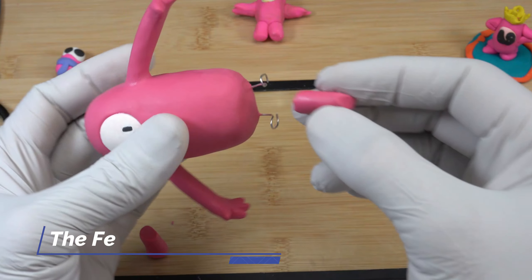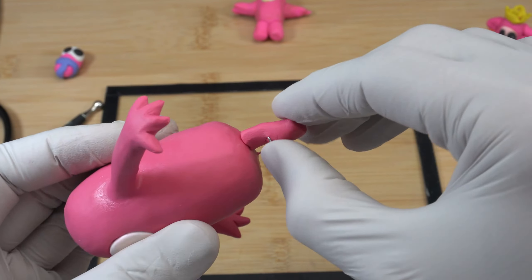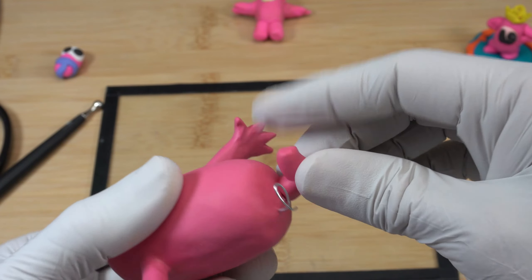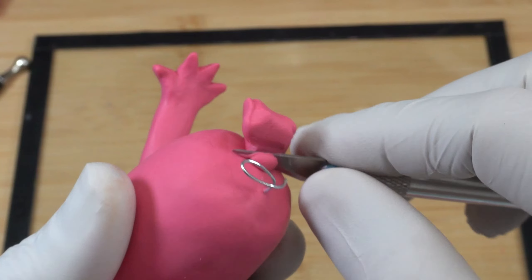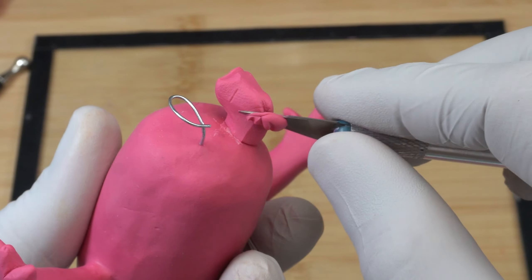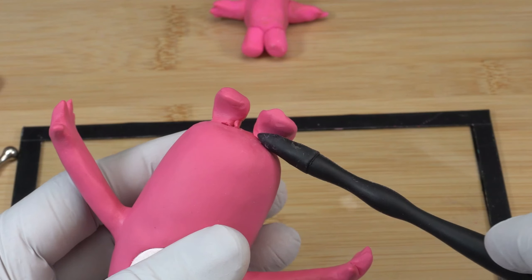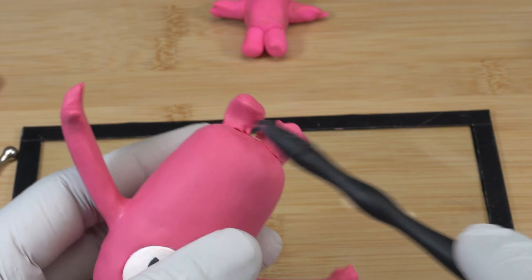The feet. I'm using two snakes of pink clay for the legs and feet. Now I'm cutting the excess clay to create the legs. I'm using the sculpting tool to create the shape.